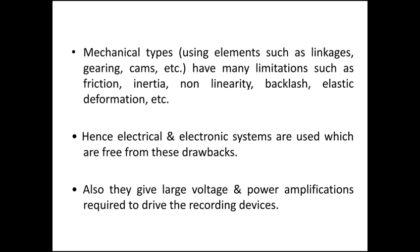Some friction, inertia, non-linearity, backlash, and elastic deformation are some limitations that come into picture while using mechanical transducers. In order to remove these drawbacks, we go for electrical or electronic systems, because these are free from friction, non-linearity, backlash, and elastic deformations. Only the signal is in the form of binary codes, so there are no mechanical components. We can easily get outputs without any drawbacks. That is why electrical or electronic components or systems are widely used as transducers.